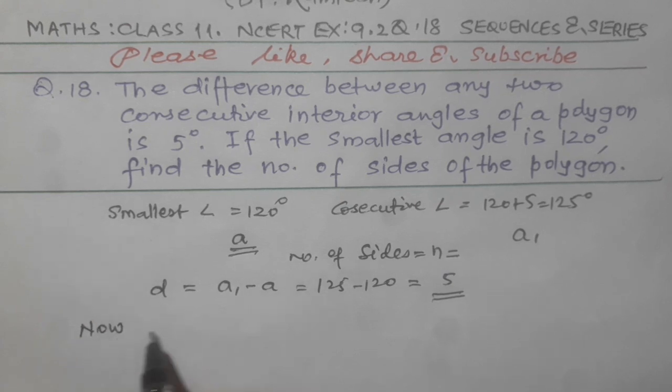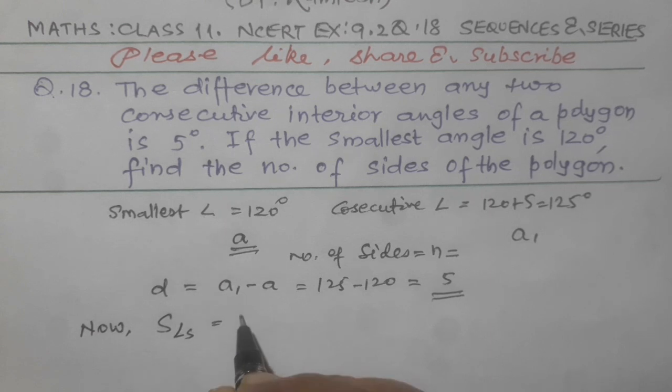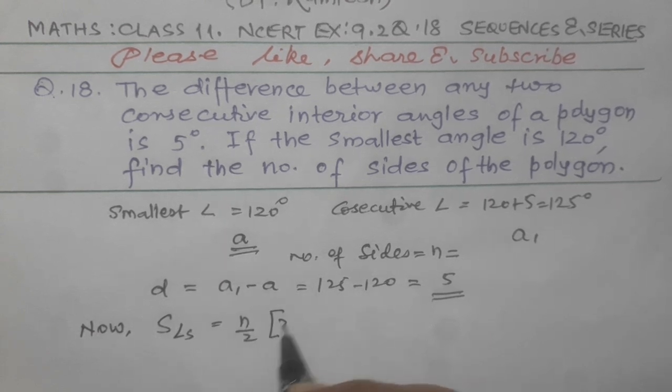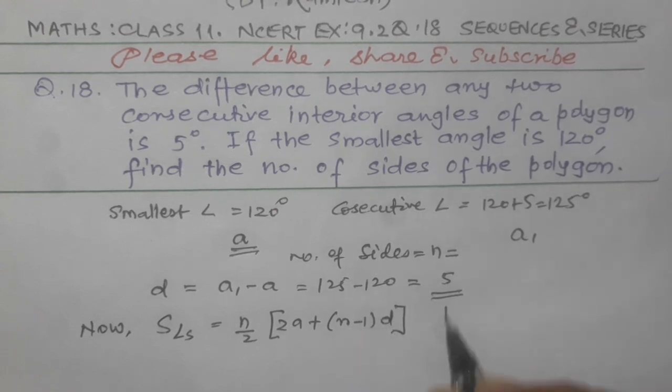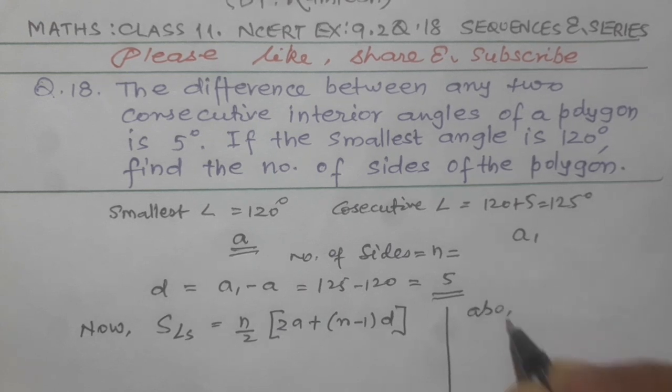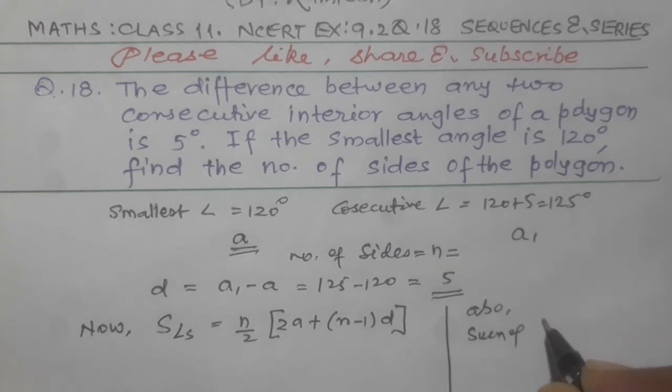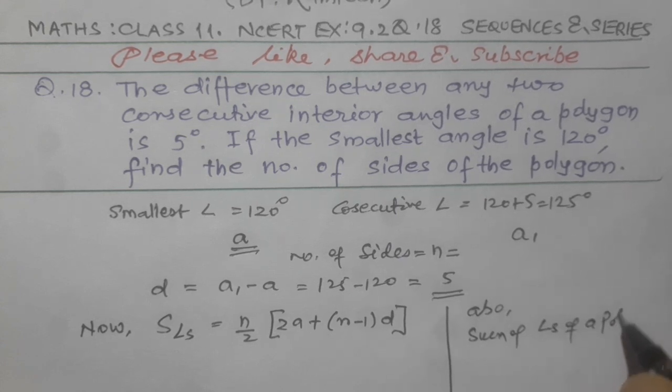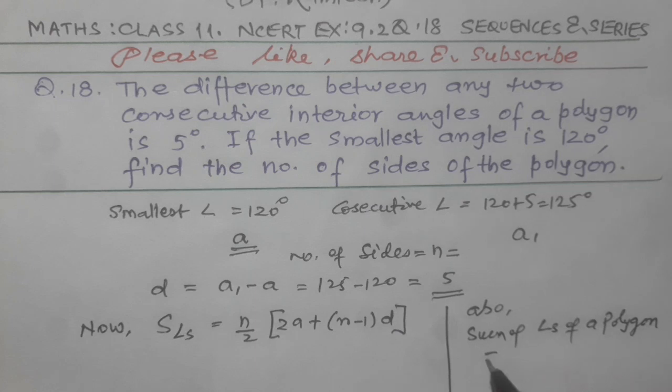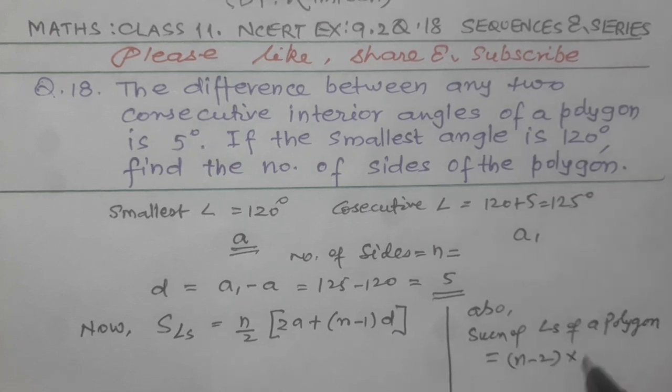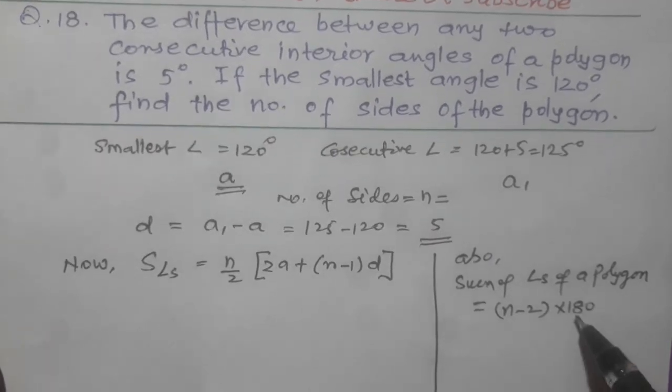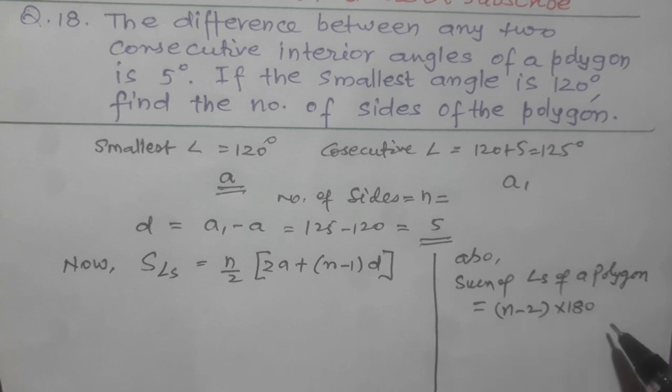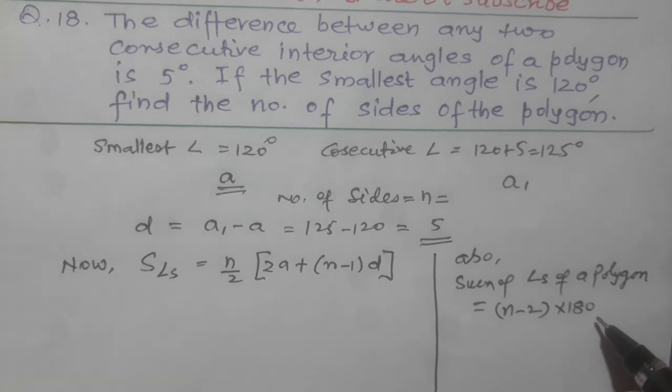Now, sum of angles is N by 2 into 2A plus N minus 1 into D. And also, sum of angles of a polygon equals N minus 2 into 180 degrees. This is a formula from earlier classes. Suppose it is a triangle with three sides, 3 minus 2 equals 1, 1 into 180. So sum of angles of a triangle equals 180.